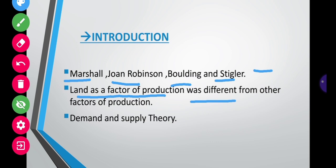Modern economists thought that all factors of production are the same — there is no difference between them. Other factors also get rewards in the form of rent. This theory is based on the concept of demand and supply: the demand for and supply of factors of production form the basis of the Modern Theory of Rent.